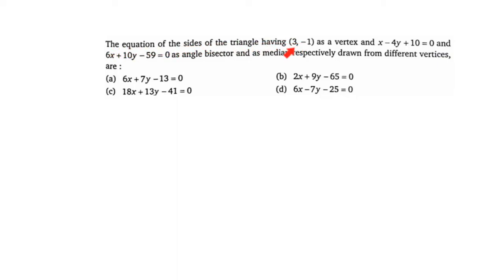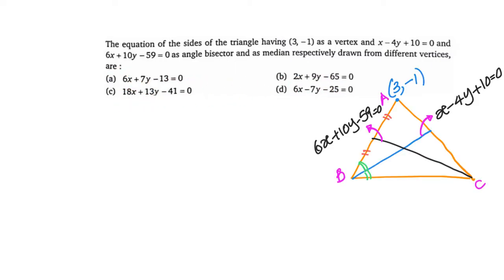The equation of sides of a triangle having (3, -1) as a vertex, where x - 4y + 10 = 0 and 6x + 10y - 15 = 0 are the angle bisector and median respectively, drawn from different vertices. We have a triangle in which (3, -1) is one vertex, and from B and C we have drawn an angular bisector and a median respectively. We have to find out the equations of sides AB, BC, and AC.